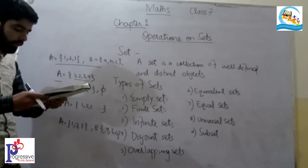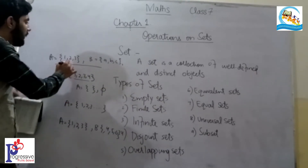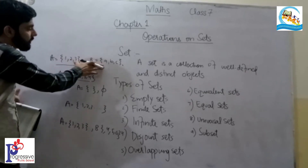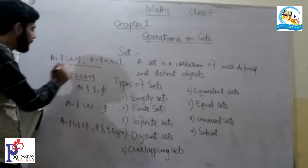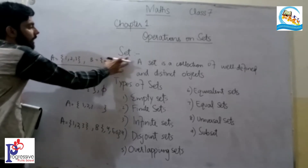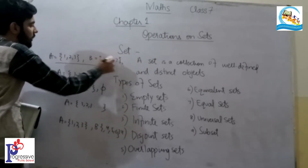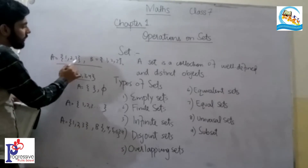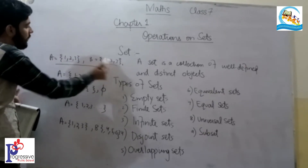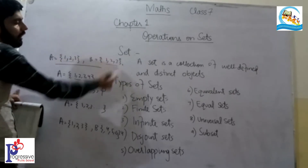Next is equal set. An equal set is a set which contains the same elements. For example, Set A = {1, 2, 3} and Set B = {1, 2, 3} — both sets have three objects and the same elements, so they are called equal sets.